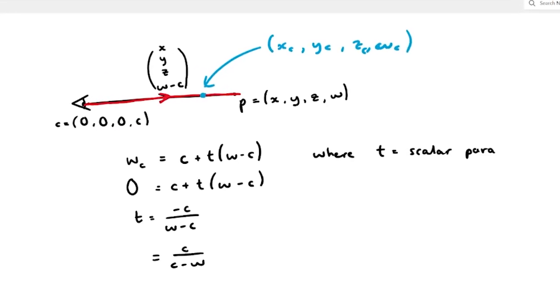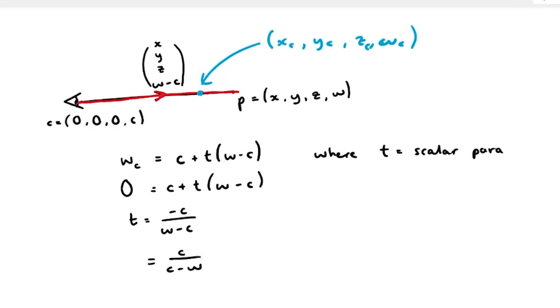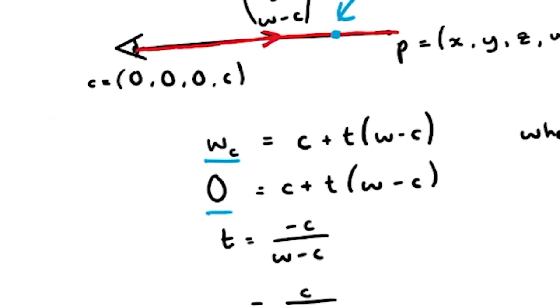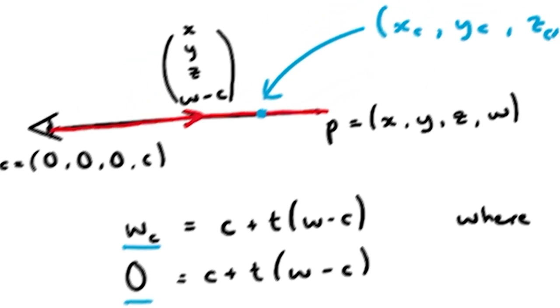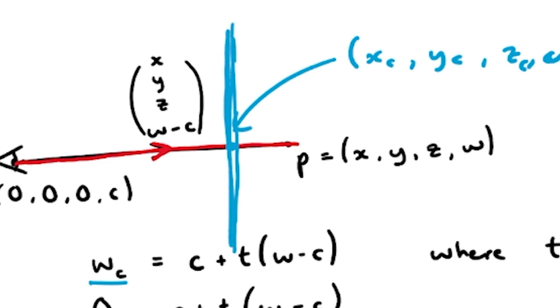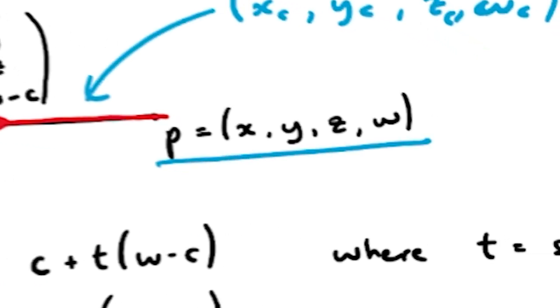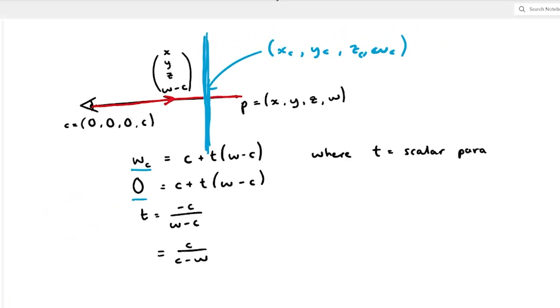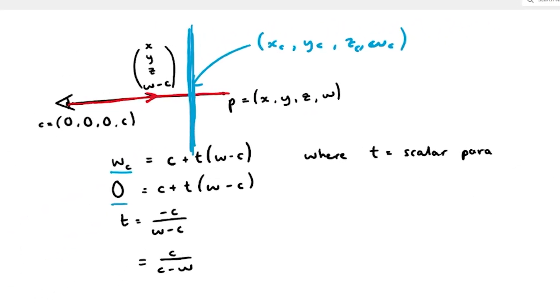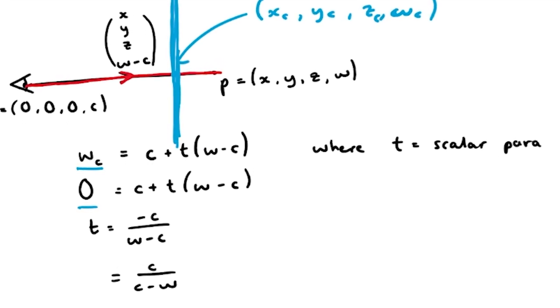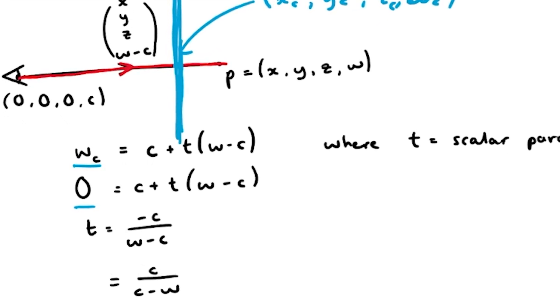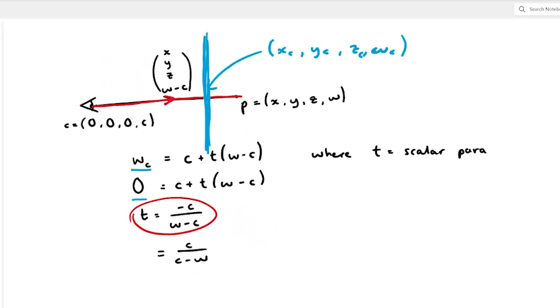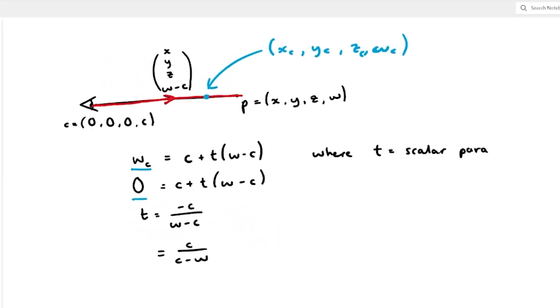Now because we want a three-dimensional cross section of a four-dimensional shape, we're going to say that wc is equal to 0. Because when wc equals 0, then this shows us a three-dimensional cross section of our four-dimensional point. So when wc equals 0, 0 equals c plus t lots of w minus c. And then if we rearrange this, we get t equals c over c minus w.